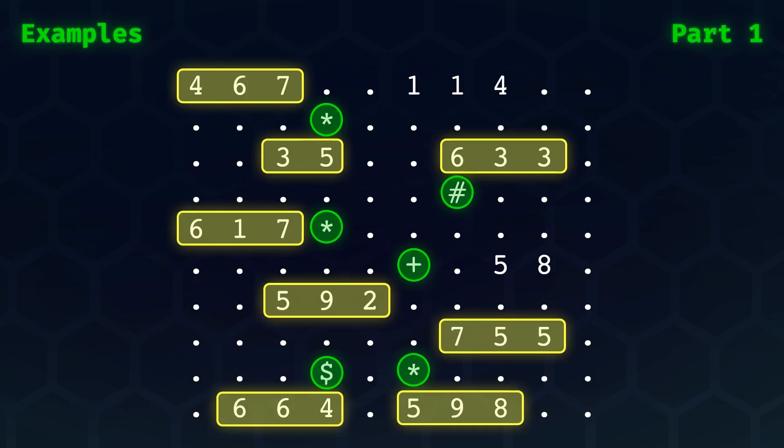If we take a look at the example given as part of the problem, then we can identify all symbols as marked by the green circles. The part numbers are all the numbers which are adjacent to these symbols, and I've marked them yellow. If you haven't given this problem a shot yet, maybe now is a good opportunity to take a stab at it. Ready? Let's take a look at the solution.